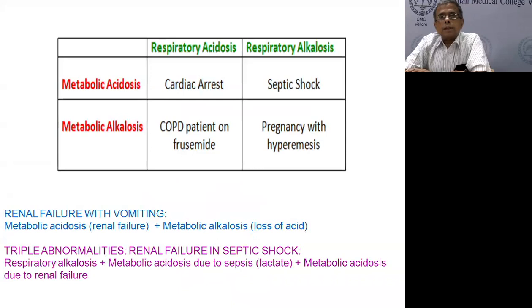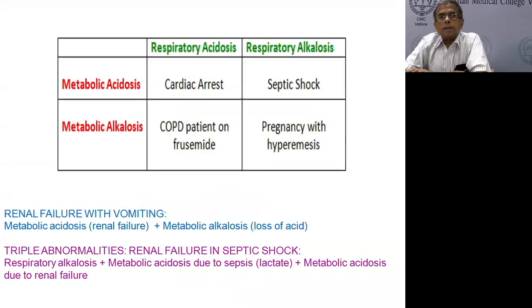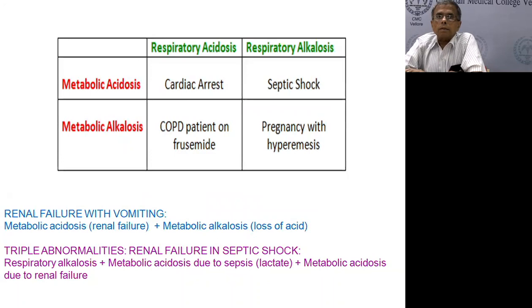Good afternoon, everyone. This is a continuation of the session done yesterday on evaluating mixed acid-base abnormalities. We discussed the pure forms yesterday — respiratory acidosis, alkalosis, metabolic acidosis and alkalosis. But in real life, things don't come pure; they come mixed and hybridized. For instance, in a person with cardiac arrest, there's a combination of being unable to breathe and lack of perfusion — that's respiratory acidosis plus metabolic acidosis.